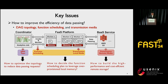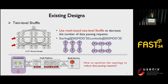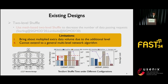There are some existing works to optimize these issues. First, two-level shuffle projects functions into a two-dimensional mesh and uses an all-to-all communication primitive for the vertical and horizontal dimensions respectively, to realize full exchange of data among functions. Since each request of two-level shuffle loads a larger volume of data, this approach can decrease the number of data passing requests. However, it brings multiplied extra data volume due to the additional level and cannot extend to a general multi-level network. The shuffle time of this approach may even be 1.9 times the baseline, which passes all data via S3.